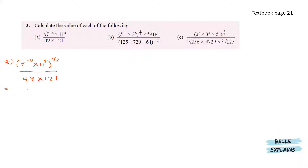Expanding the brackets, we have 7 to the power of negative 2 and 11 to the power of 2, over 49 — which can also be written as 7 squared — and 121, which is 11 squared.